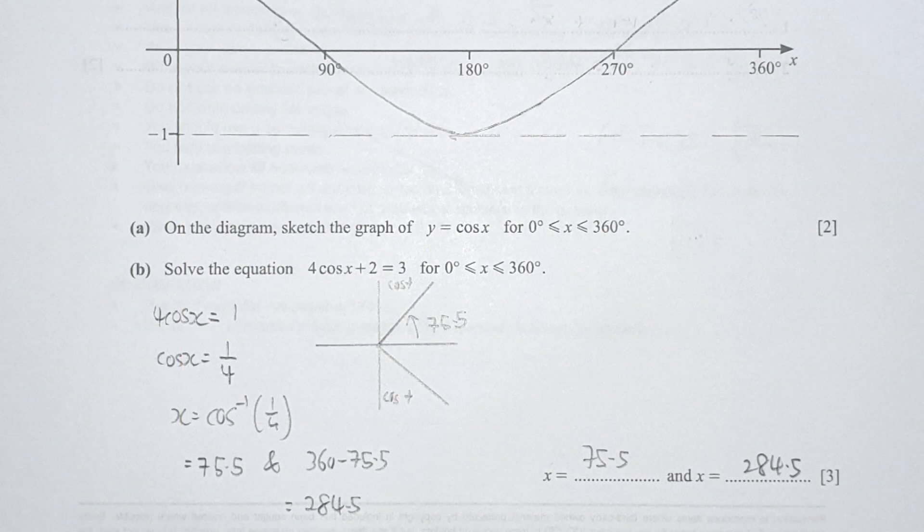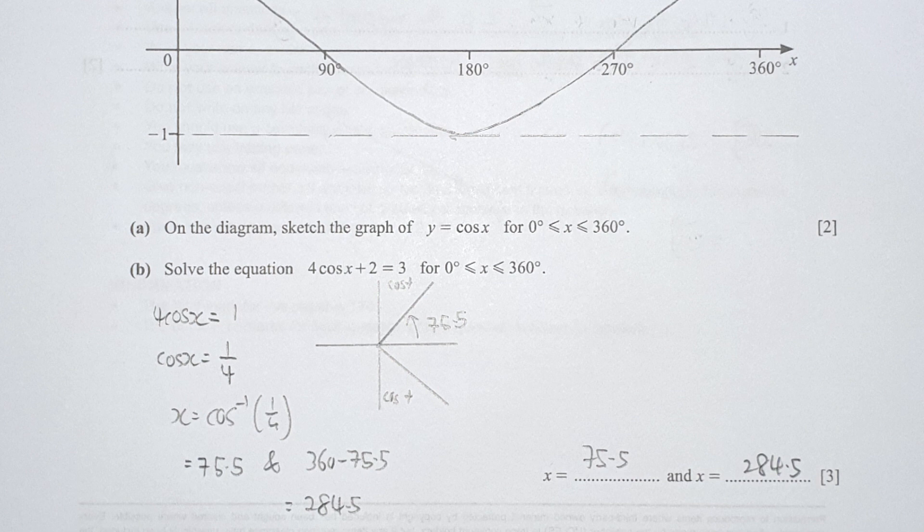Part B is the tricky one. If you struggle with this topic, I've made a video in my library under the quadrant topic. Solve cosine x plus 2 equals 3. I rearrange to get cosine x equals 1 over 4. This tells us cosine is positive, giving results in the first and fourth quadrant. By keying in cosine inverse 1 over 4, I get 75.5. For the fourth quadrant, I use 360 minus 75.5, giving 284.5.